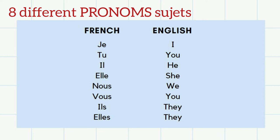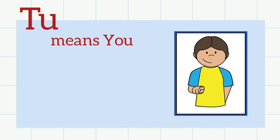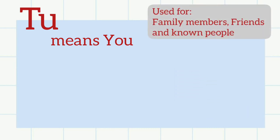Let's try to understand these pronoms sujets. Je means I. Je, je, je is pronounced as J in measure, measure, je. The next pronom sujet is tu. Tu means you. Tu can be used for addressing our family members, our friends, or the known people to us.